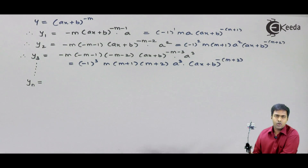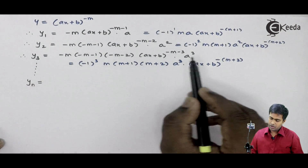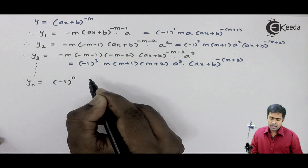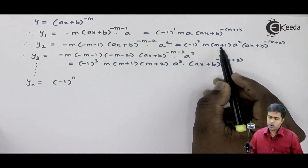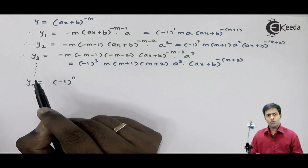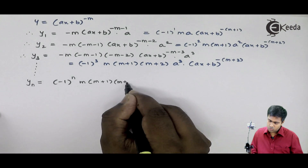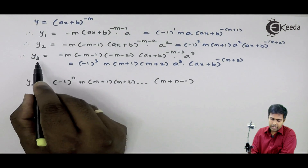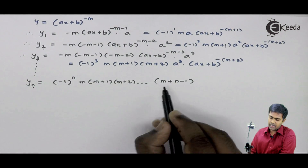Now let's predict yn. Since we get (−1)^1 in y1, (−1)^2 in y2, and (−1)^3 in y3, we get (−1)^n in yn. Similarly, we get m in y1, m(m+1) in y2, and m(m+1)(m+2) in y3. So in yn we get m times (m+1) times (m+2) up to (m + n − 1), since the last term for y3 was 2, for y2 was 1, hence for yn the last term will be n − 1.